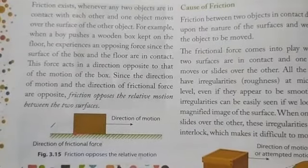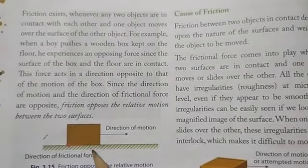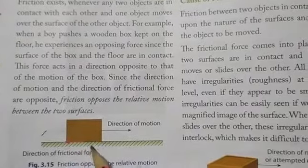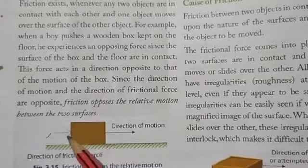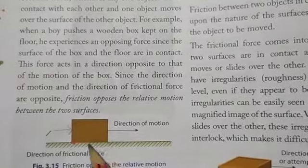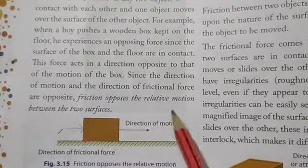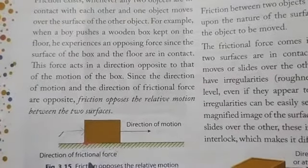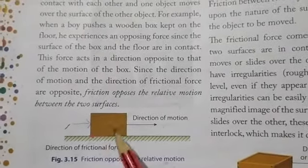Here is an example showing that friction opposes the relative motion between two surfaces. A wooden box is kept over the floor, so the surface of the wooden box is in contact with the floor. Whenever a person tries to push or move this box, he experiences an opposing force because the surfaces are in contact. The frictional force acts in a direction opposite to the direction of motion, confirming that friction opposes relative motion between the two surfaces.